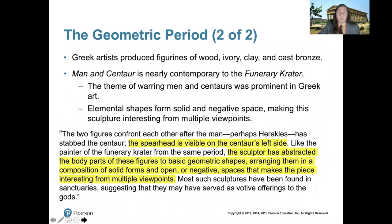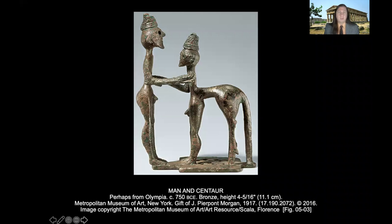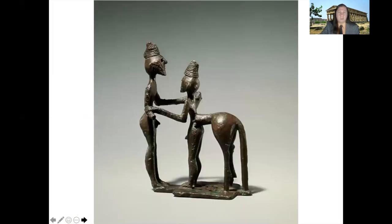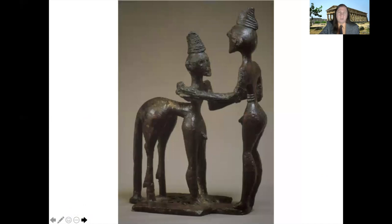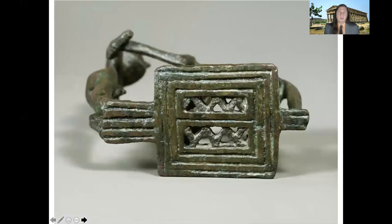Bronze sculpture from the geometric period includes 'Man and Centaur,' which would have been an offering in a temple and is roughly contemporaneous to the funerary crater. Combat between humans and centaurs is a common theme in Greek art into the classical period. The man on the left is stabbing the centaur in the ribs with a spear. Again we have really simplified, abstracted human figures, and all the negative space of the sculpture is filled with geometric abstractions.